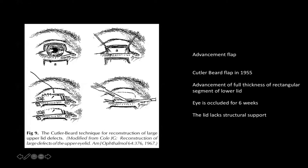For the Cutler-Beard flap, an incision is made three to five millimeters below the lid margin on the lower lid, and the conjunctiva is also incised and dissected up to the fornix and orbital margin. The skin is taken under a skin bridge to the upper eyelid defect, resulting in a closed eye for the patient. You wait for this bridge to draw blood supply from the upper lid — kept occluded for six to eight weeks — then divide the bridge and suture the lower lid remnants back.